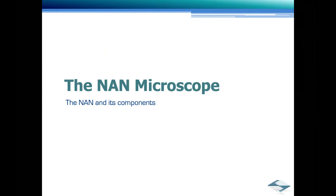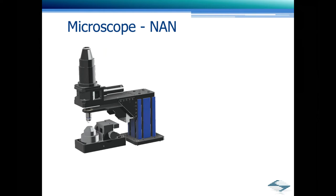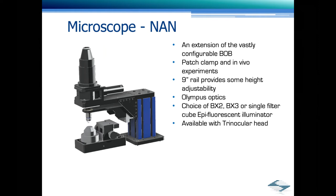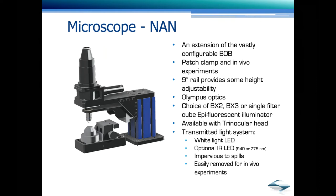Now that we have our foundation, we need to build on it by adding a microscope and its supporting components. I would like to start off with one of the newest specialized microscope, the NAN. The NAN is an extension of the vastly configurable BOB. It was designed for patch clamp and in vivo experiments. Is mounted on a 9-inch rail which provides some height adjustability. Uses Olympus Optics. You have a choice of BX2, BX3, or single filter cube epifluorescent illuminator. Available with or without a trinocular head. It includes a transmitter light system with a white light LED and with an optional IR LED available in either a 940 or 775 nanometer wavelength.